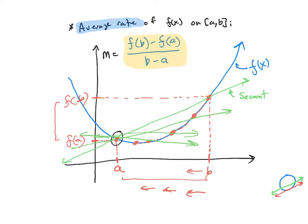If I keep moving b closer and closer, ultimately we move b right on top of a. That new line — which I'll draw in red — when b is right on top of a, I get a tangent line. It bumps up against that curve at one spot. The idea is that we take b and as we move it toward a in a limiting sort of process, eventually we end up with this tangent line.